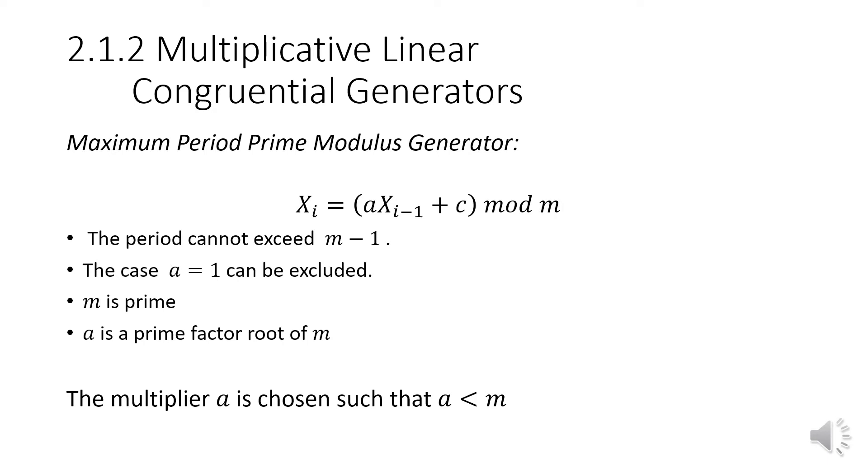Multiplicative linear congruential generators are slightly different in that we're following a set of properties for the multiplicative operator. If the maximum period of random numbers is desired, one must utilize the maximum period prime modulus generator rules, which we know that the period cannot exceed M minus one, the case for A equals one cannot be excluded, M must be prime, and A is a prime factor root of M, which helps us know that A must be less than M.